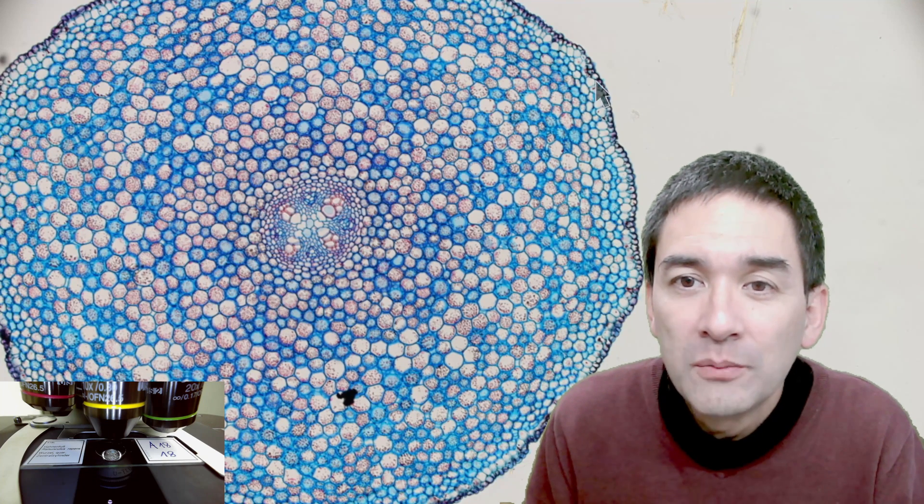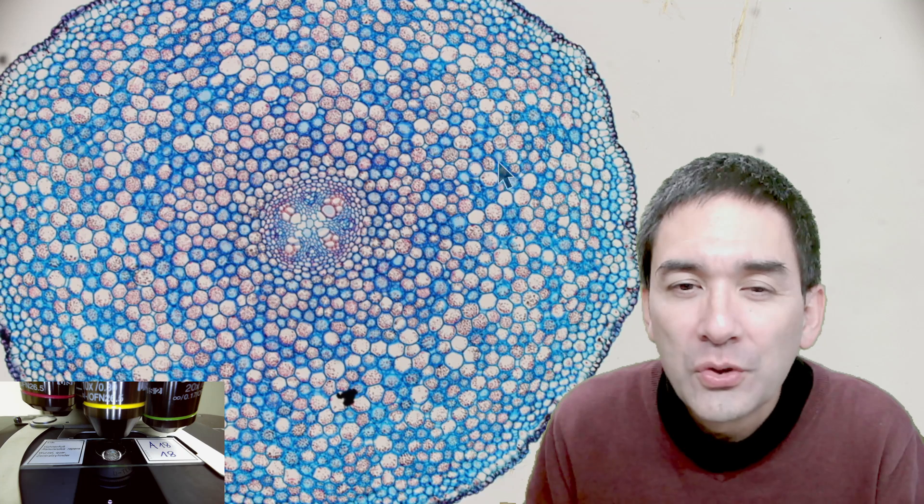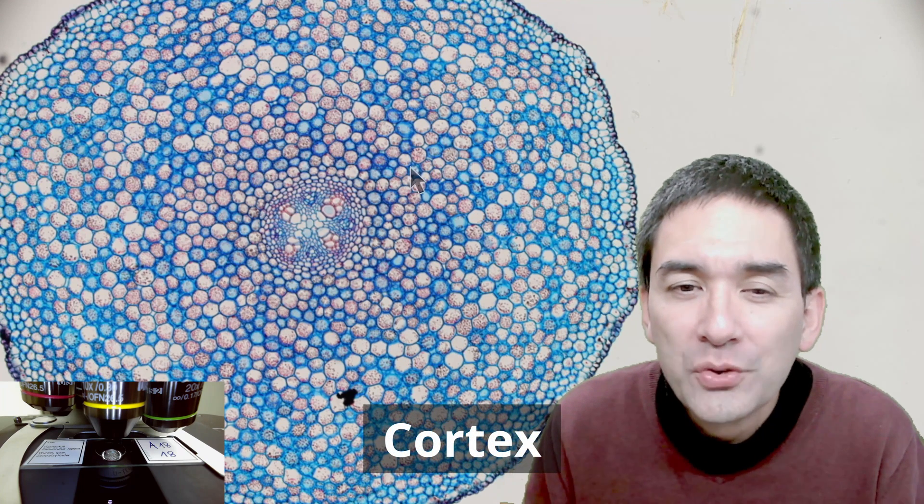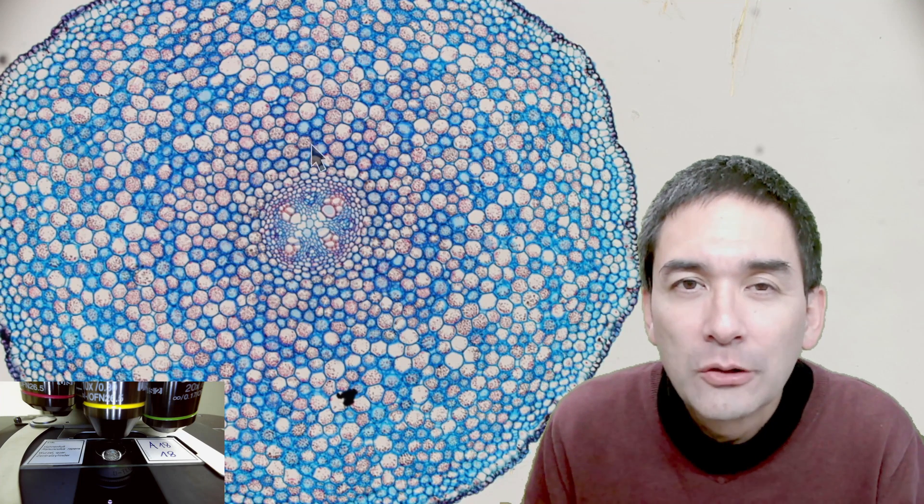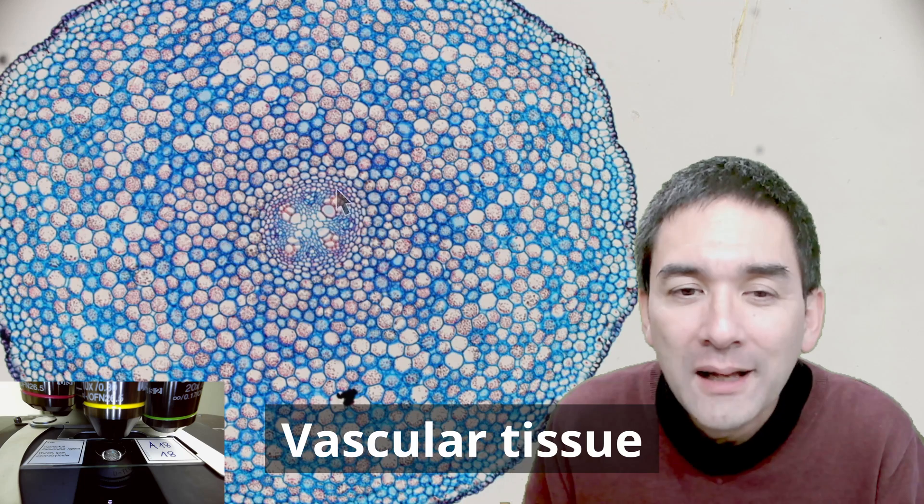You see that some of the cells like the ones on the outside here are a little bit smaller. Then we have of course this is called the cortex. Here these are the outermost cell layers and then here in the center this is the vascular tissue. This is where substances are transported up and down the plant.